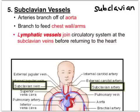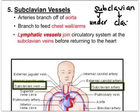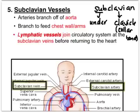The next group is the subclavian vessels — arteries, capillaries, and veins. The subclavian arteries branch off the aorta and deliver blood to the chest region and the arms. 'Sub' means under and 'clavian' means clavicle — your collarbone — so these vessels run just under your clavicle. They branch down into the brachial arteries in your arms, which is where blood pressure is typically measured.